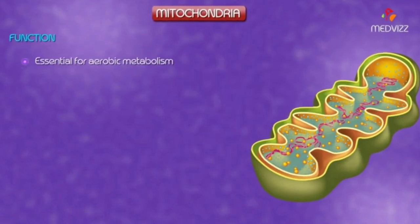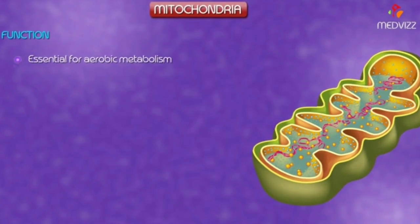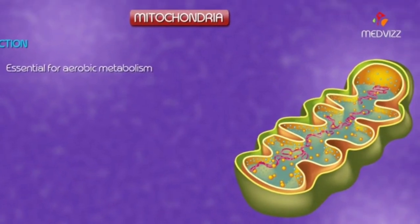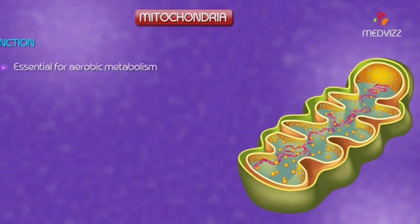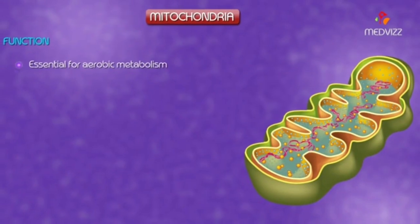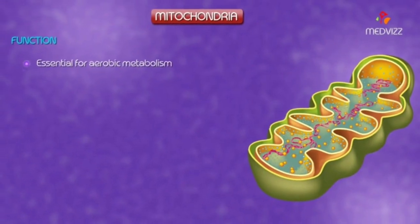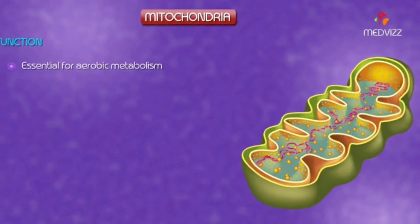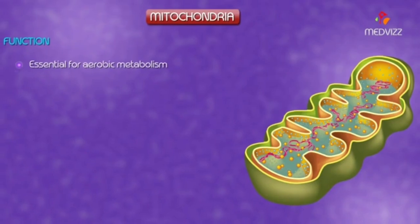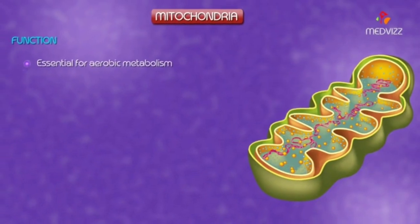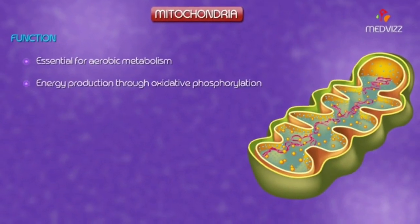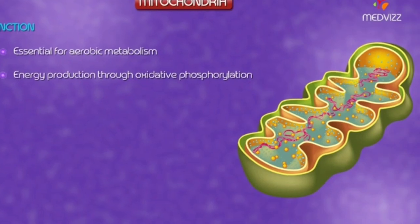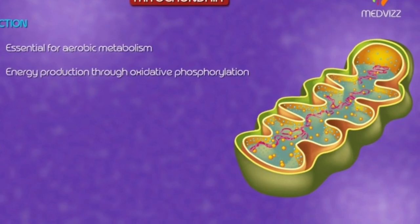Mitochondria are intracellular organelles essential for aerobic metabolism and energy production through oxidative phosphorylation, which is accomplished by the respiratory chain. However, mitochondria are not only the ATP-producing powerhouse of the cell.